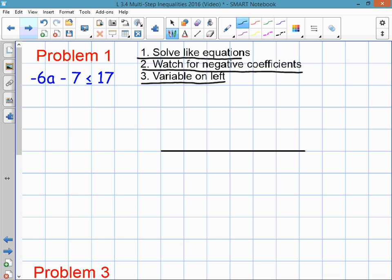So let's take a look at this first problem. It's multi-step because it's more than one step. Some will be as simple as a two-step problem like this. You'll solve it just like an equation. To get rid of the minus 7, you're going to add 7. What you do on one side of the inequality, you do on the other side. The 7's cancel. 17 plus 7 is 24.